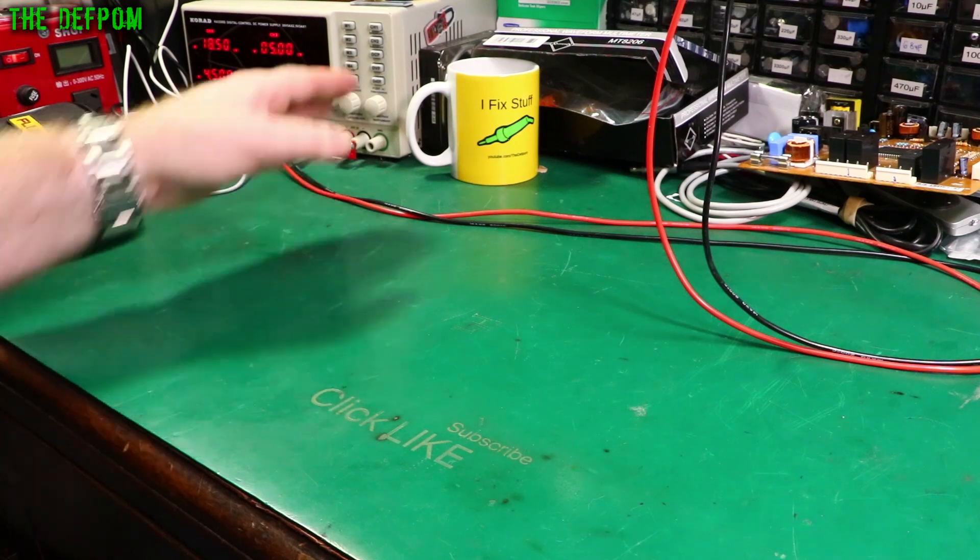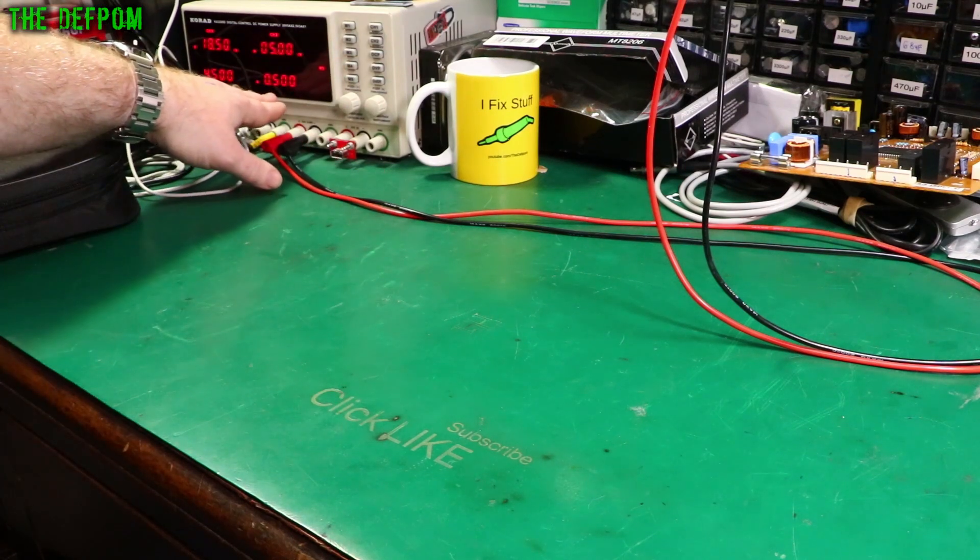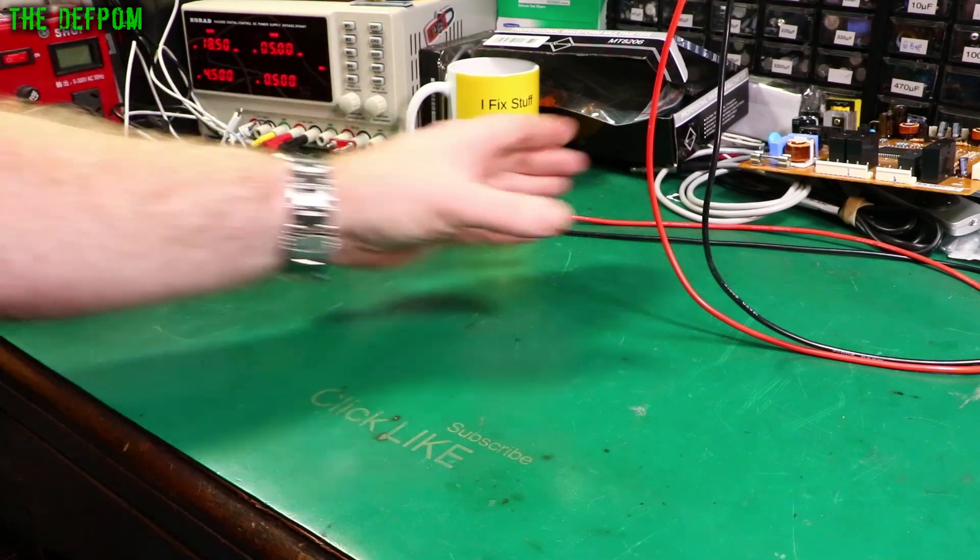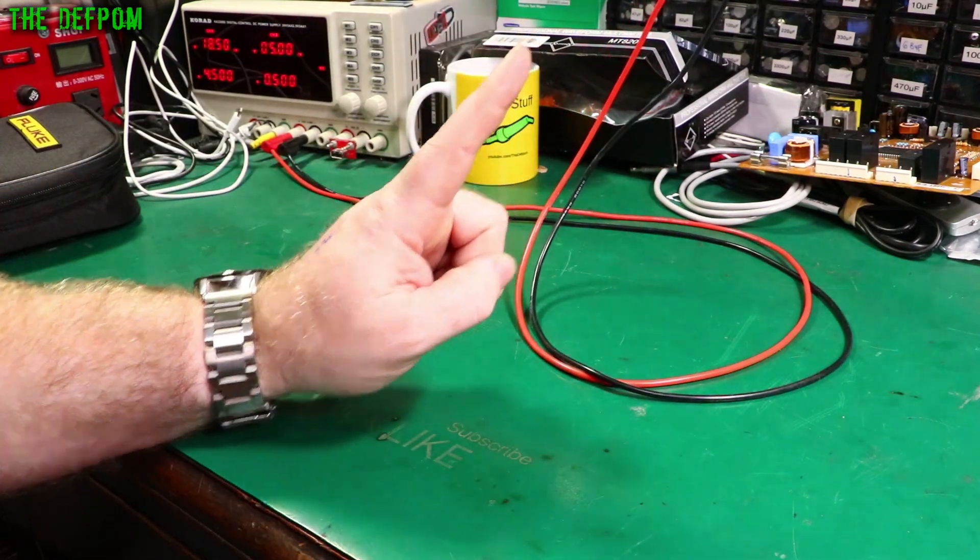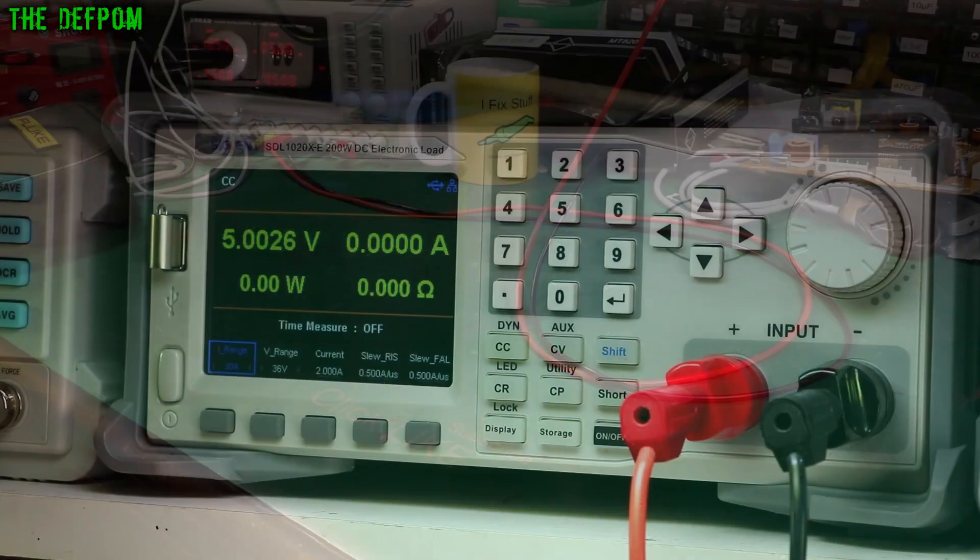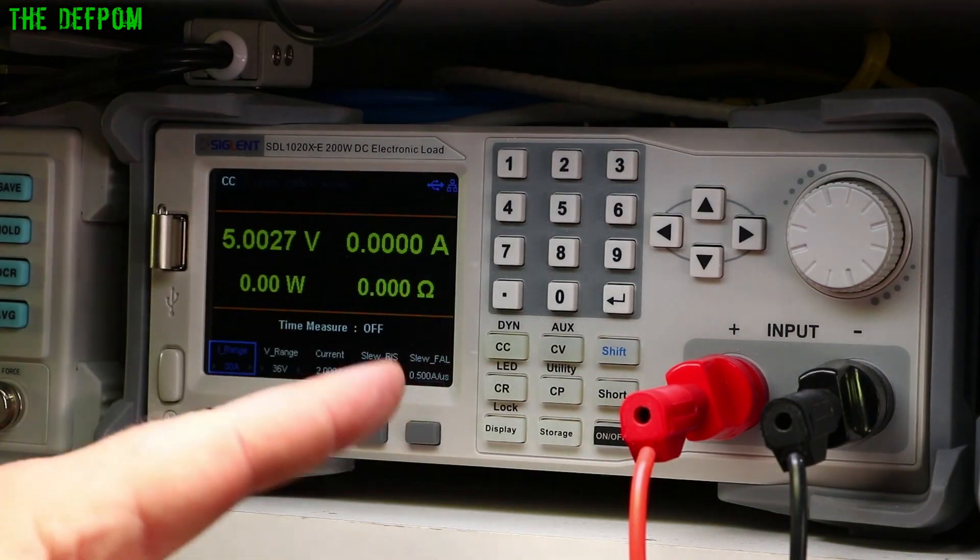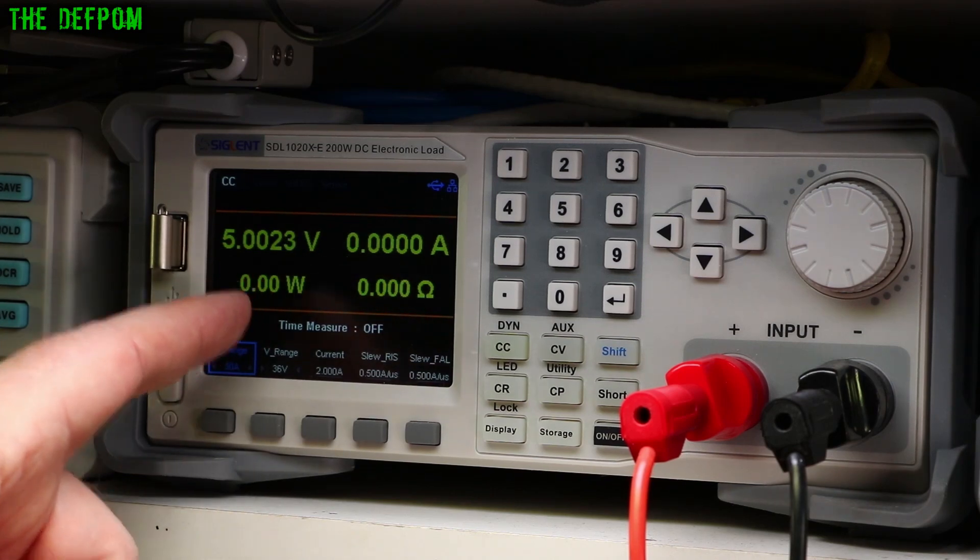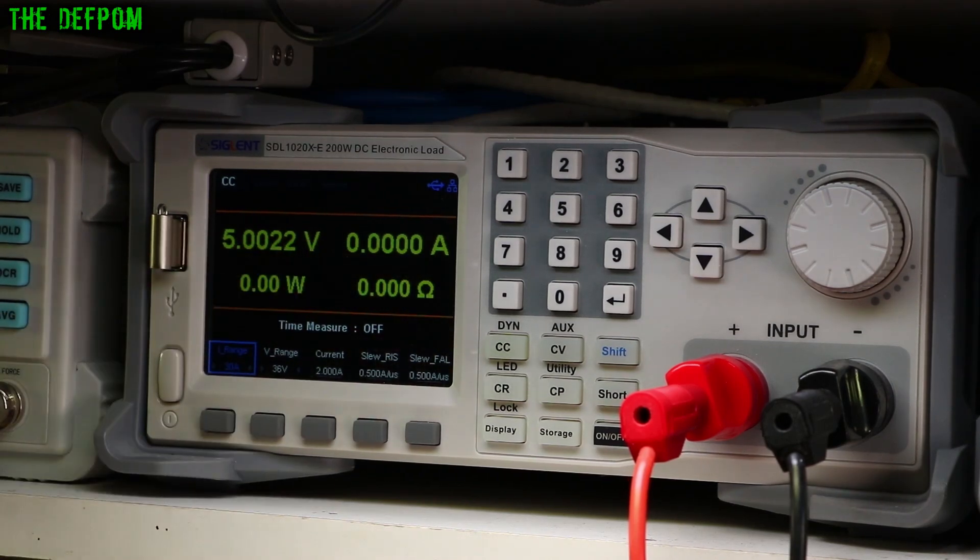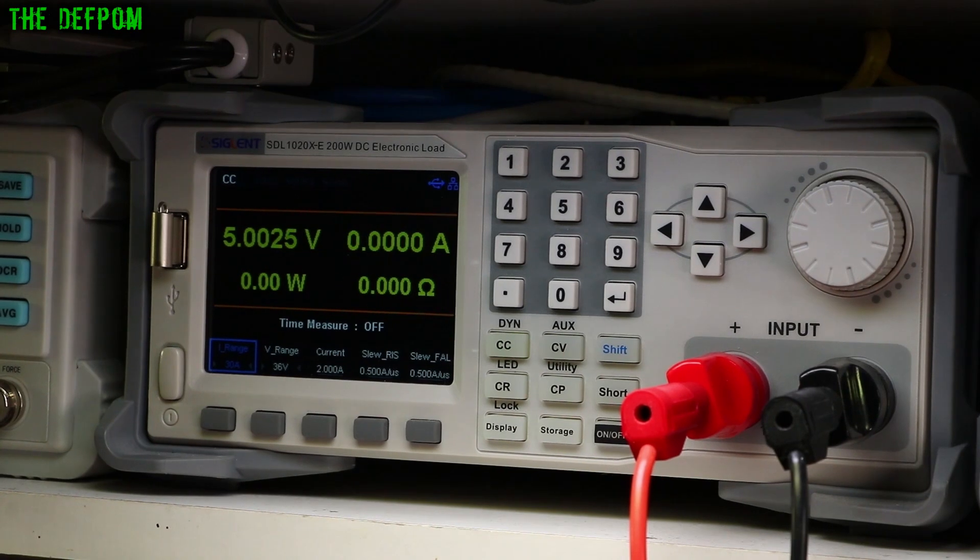So here I have my power supply set at 5 volts, half an amp, as you can see. You may see this cable going off up here. Up here, I have a DC electronic load. I want to change the camera view, so I'm going to have a look at that. So over here, you can see this DC electronic load is not currently turned on. We're delivering it with 5 volts on the power supply. So this is the power supply voltage, just 5 volts. The current limiting is set at 500 milliamps.